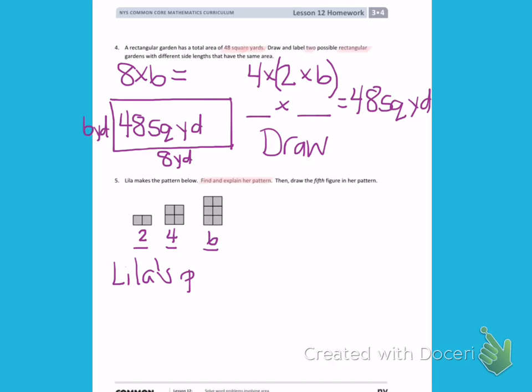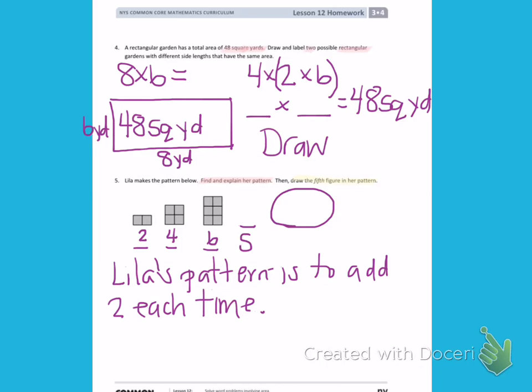So I can say, Lila's pattern is to add 2 each time. Next, the problem asks me to draw the fifth figure. So I don't want to draw what comes next. I want to draw the fifth figure. So if I kept counting up, the next number I would count is 8. I want you to count the next number and draw a figure that will match. It needs to have an area that matches the number you figure out goes in the blank.